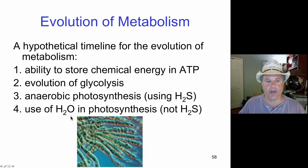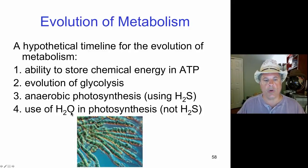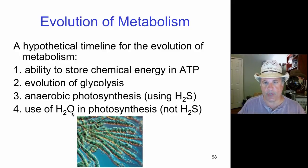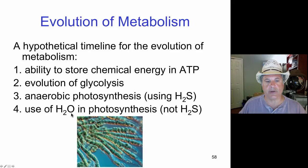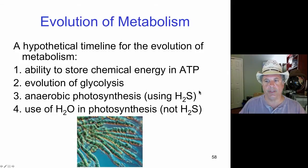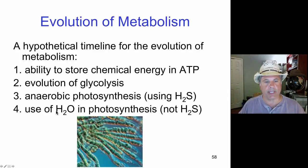That oxygen was probably initially toxic to organisms, but organisms later evolved a way to use oxygen in catabolism — in respiration. That was a huge advance. The early bacteria that evolved oxidative phosphorylation, using oxygen as an electron acceptor at the end of the electron transport chain, had a huge advantage in that they derived much more energy to drive ATP synthesis. We know that ancient cyanobacteria evolved this ability at least 2 billion years ago.